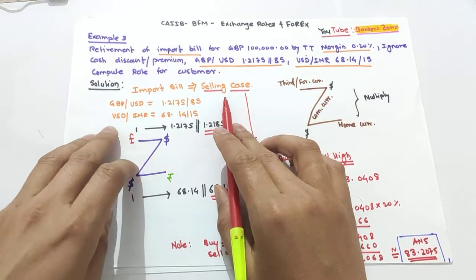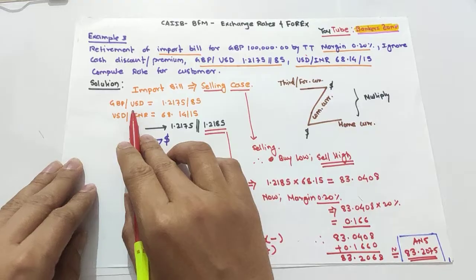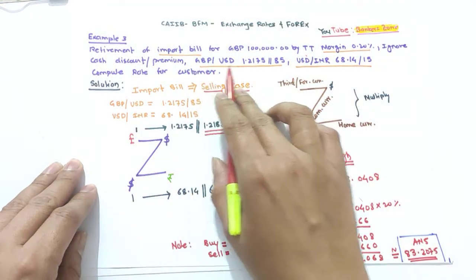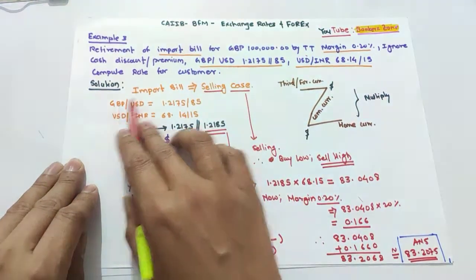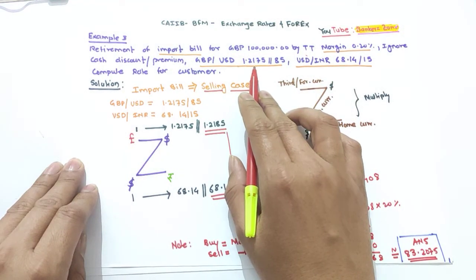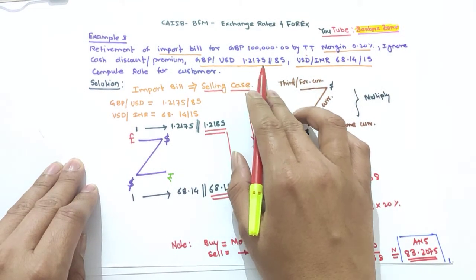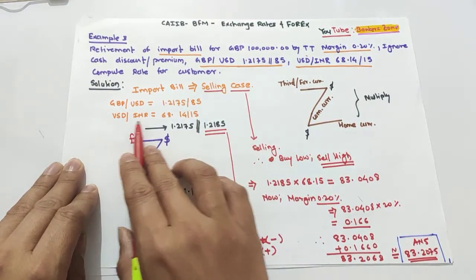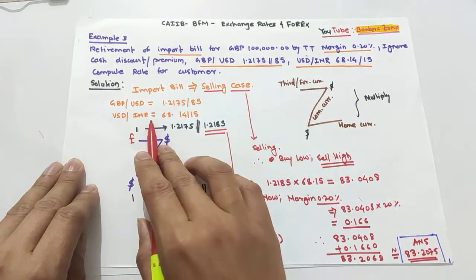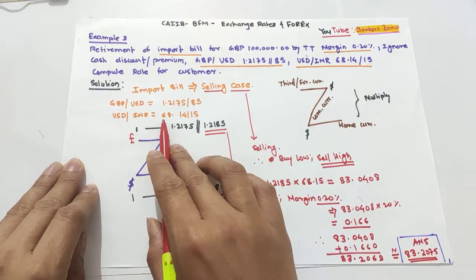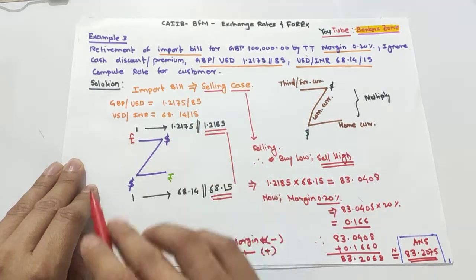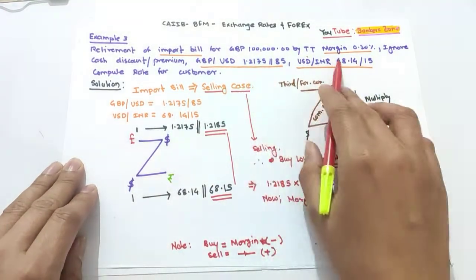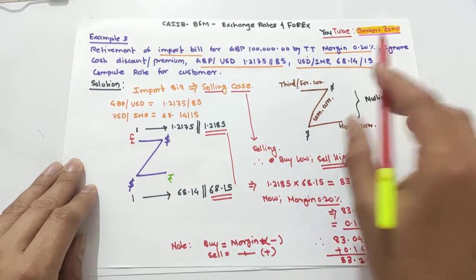The given data is: GBP/USD is 1.2175/1.2185, and USD/INR is 68.14 and 68.15. So when two cross rates are given, how do we solve this type of numerical?